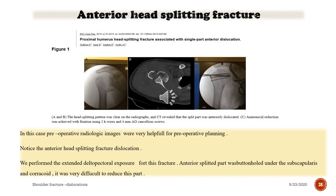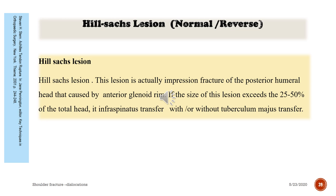In this case, preoperative physiologic images were very helpful for preoperative planning. Notice the anterior head-split fracture dislocation. An extended deltopectoral exposure was performed. The anterior split part was button-holed under the subscapularis and coracoid, making it very difficult to reduce, but great reduction and internal fixation were achieved.